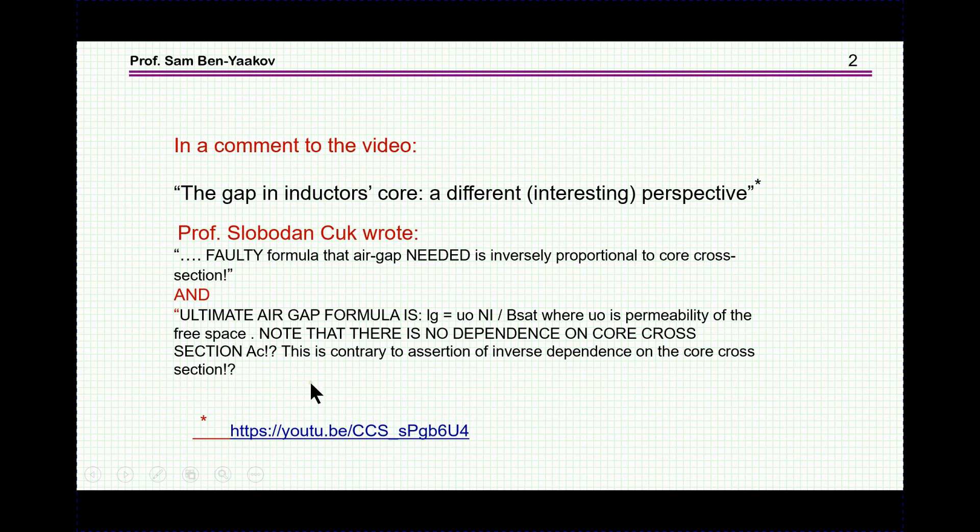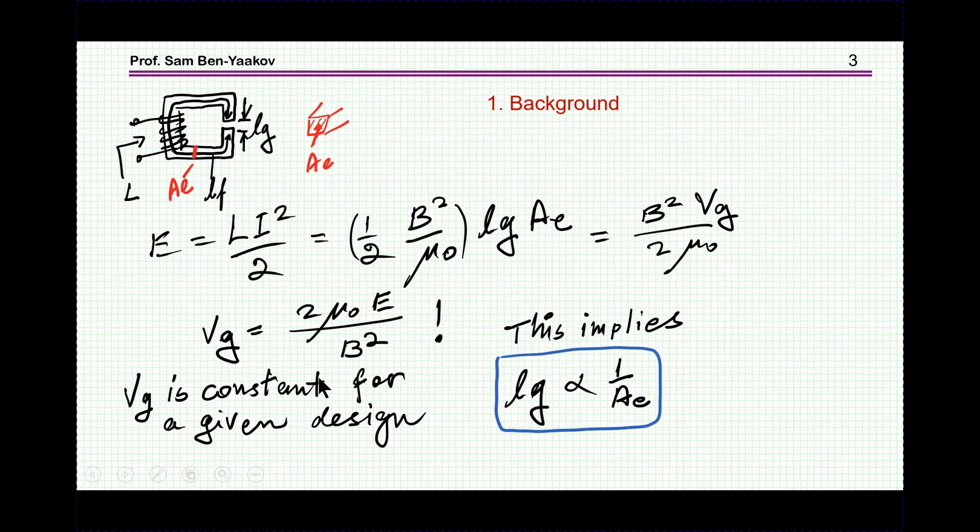In order to explain the apparent conflict here, let me start with some background. In the video I mentioned, I have shown that if you start with the energy stored in a core, you can equate it to this expression: B squared times volume of the gap over 2 mu sub 0.